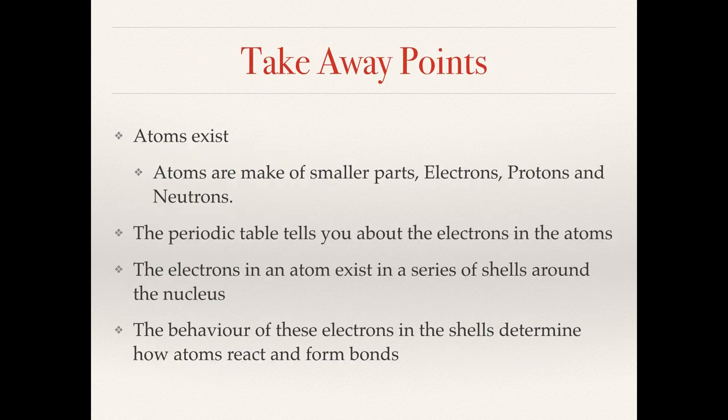Take away points from this video. Atoms exist. Atoms are made of smaller parts: electrons, protons and neutrons. The periodic table tells you about the electrons in the atoms. Good periodic tables will also tell you the number of protons in an atom, the weight of atoms and things. We'll use this when we look at dilutions in another video. The electrons in an atom exist as a series of shells around the nucleus, and the behaviour of these electrons determine how atoms react and form bonds. That's the end of this video. Thank you very much for your attention. If you have any comments or suggestions, please email me, leave them in the comments below, or find me on Twitter. The next video will be looking at forming bonds and molecules.